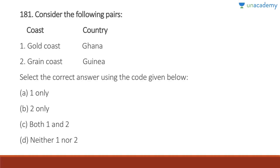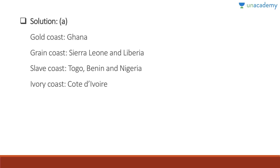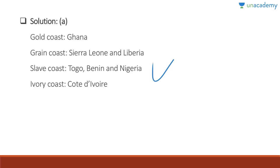Question 181: Gold Coast is Ghana — correct. Grain Coast is Guinea — wrong. Answer is A, one only. Ghana is Gold Coast; Grain Coast is Sierra Leone and Liberia; Slave Coast is Togo, Benin, and Nigeria; Ivory Coast is Côte d'Ivoire.